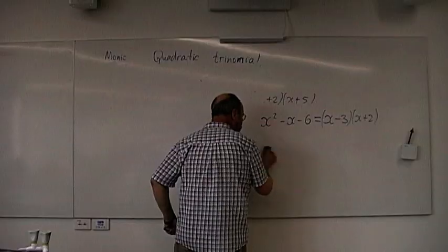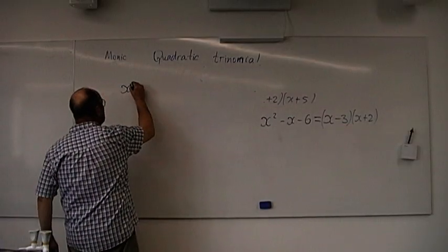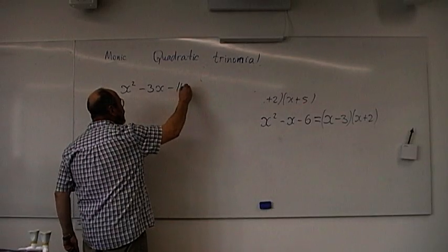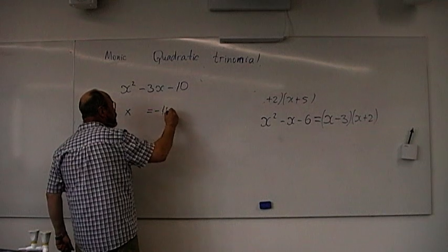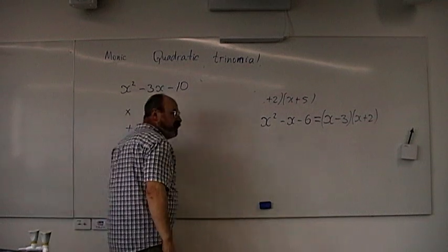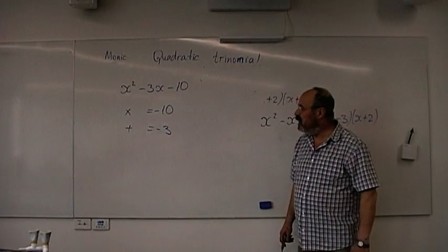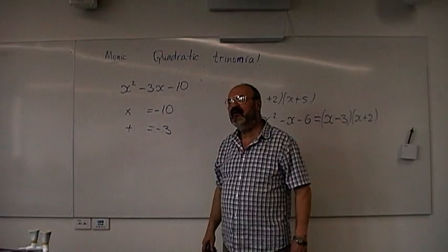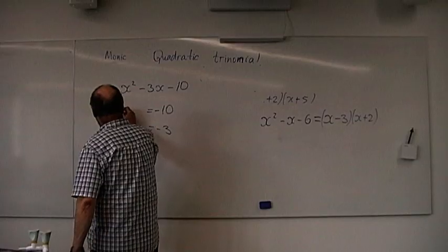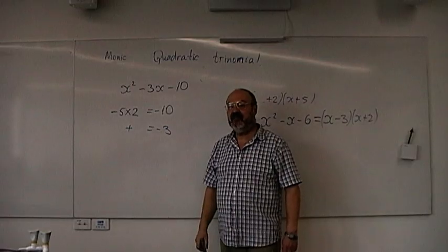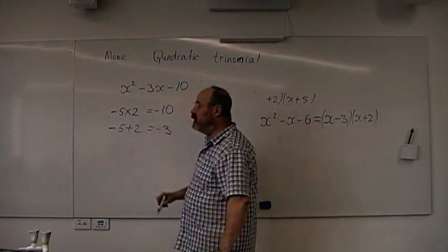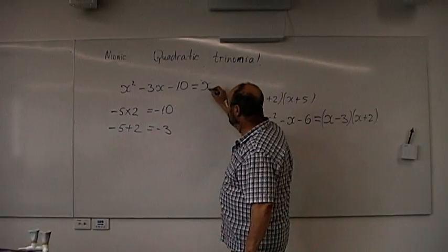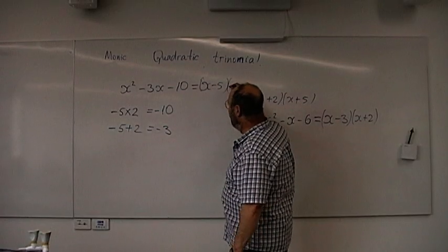Another example: x squared minus 3x minus 10. We need to find two numbers which multiply to negative 10 and add to negative 3. Those numbers are negative 5 and positive 2 — because negative 5 times 2 equals negative 10, and negative 5 plus 2 equals negative 3. So this factorizes to x minus 5 times x plus 2.